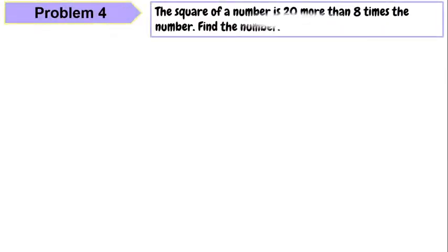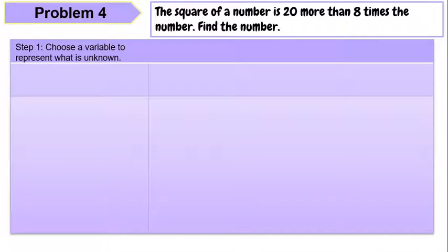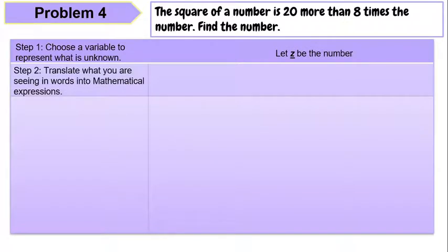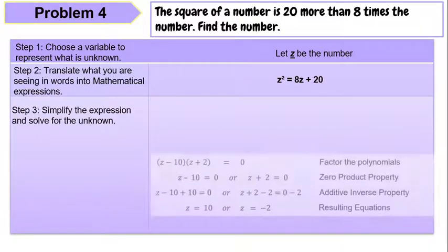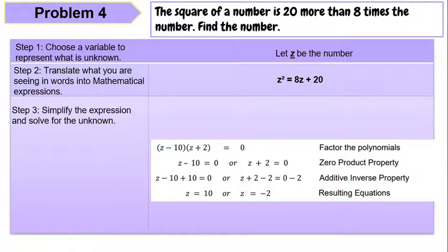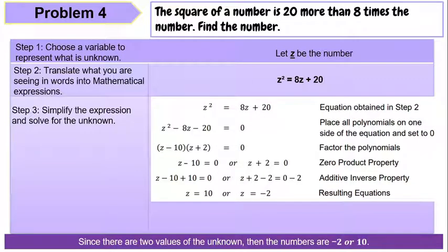Problem 4. The square of a number is 20 more than 8 times the number. Find the number. Let z be the number. Translating: the square of a number, z squared, is 20 more than 8 times the number, giving z squared equals 8z plus 20. Placing all polynomials on one side and setting equal to 0: z squared minus 8z minus 20 equals 0.